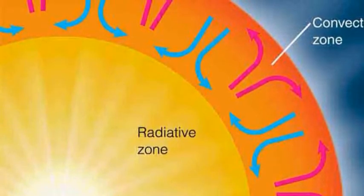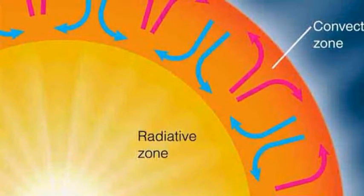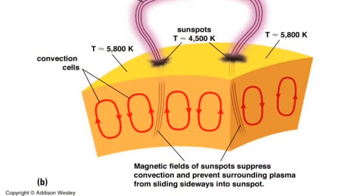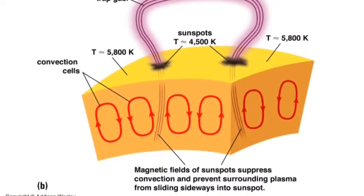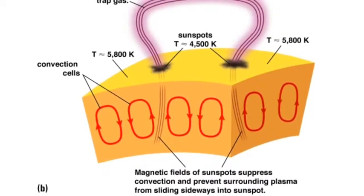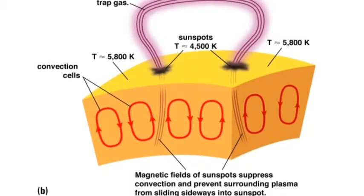The convection zone is the outermost layer of the sun's interior. Hot gases rise from the bottom of the convection zone and gradually cool as they approach the top. Cooler gases sink, forming loops of gas that move energy towards the sun's surface.